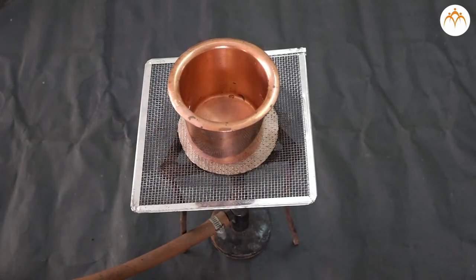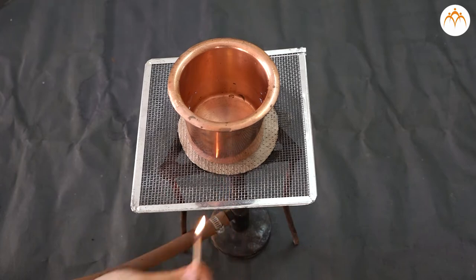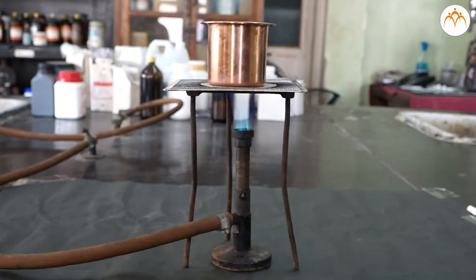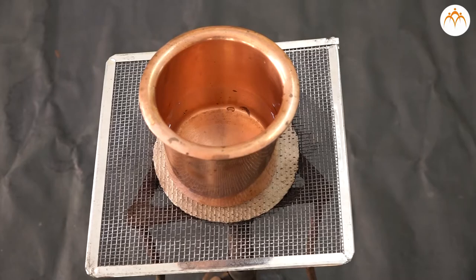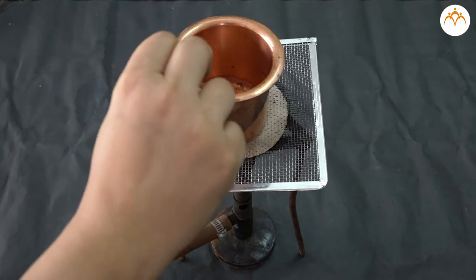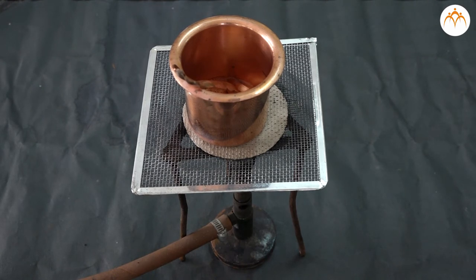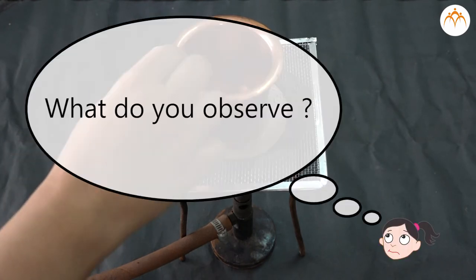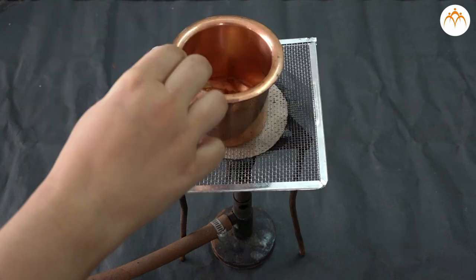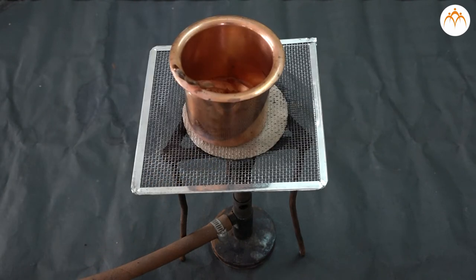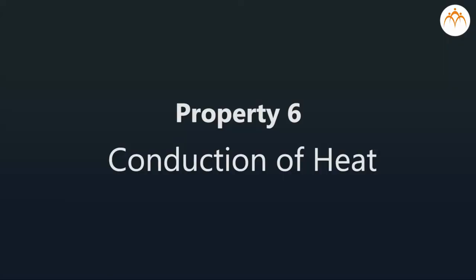Take one vessel, add one cup of water in it, and heat the water for some time. Keep one spoon in this vessel, then remove the spoon from that vessel. Now what do you observe? As soon as you touch the spoon, your hand gets burnt. This shows that metals conduct heat.